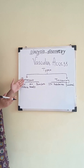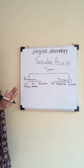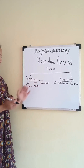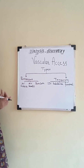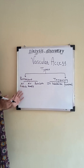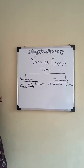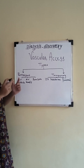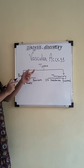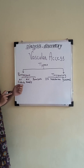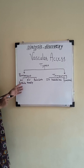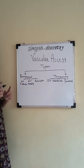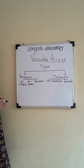Under the permanent category, there is AV fistula, AV graft, and permcath. The AV fistula is the connection between the artery and the vein, and the maturation time of the AV fistula is 6 to 8 weeks.